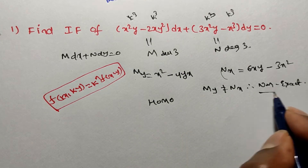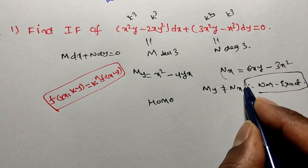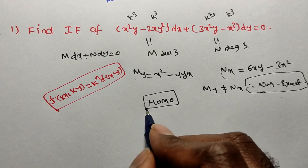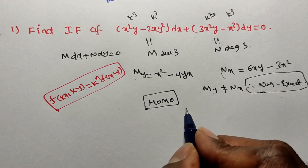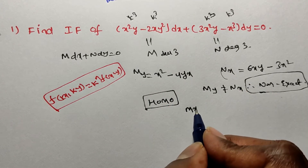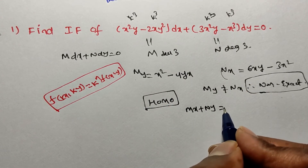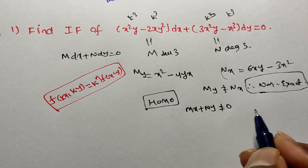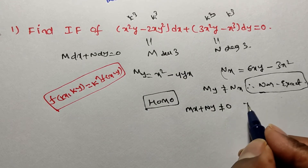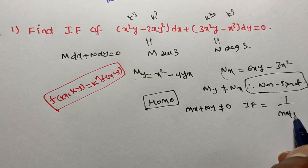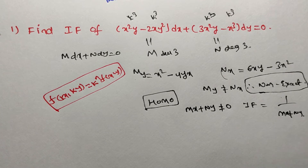First condition: non-exact. Later we proved homogeneous. Now verify mx plus ny. If mx plus ny is not equal to 0, then the integrating factor is 1 by mx plus ny.